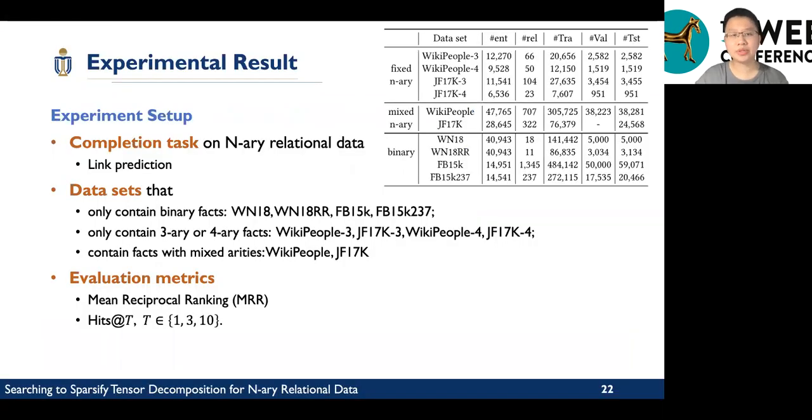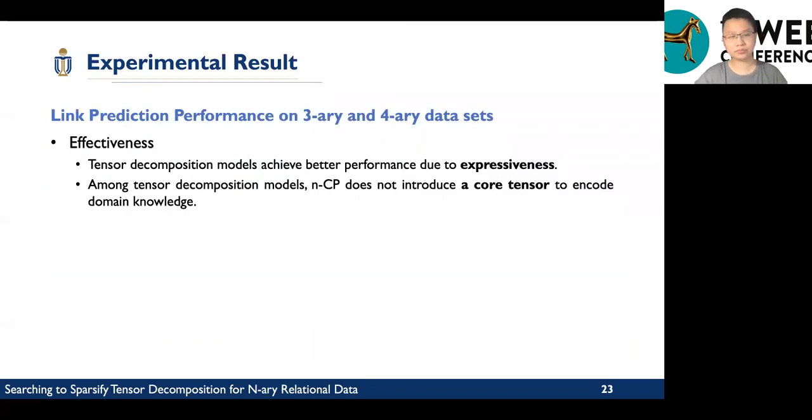In experimental results, we mainly conduct experiments on link prediction and we utilize different datasets, datasets that only contain binary facts and only contain three-ary or four-ary varieties. And we utilize the MRR and the Hits as the evaluation metrics.